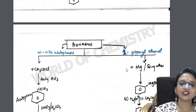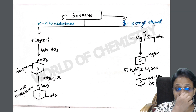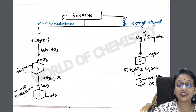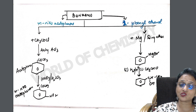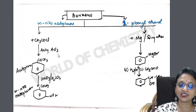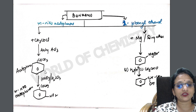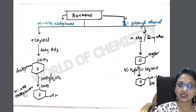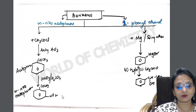Benzene to metanitroacetophenone: do Friedel-Crafts acylation in presence of anhydrous AlCl₃ to get acetophenone. Acetophenone is ready — introduce nitrating mixture, and since the carbonyl group is meta-directing, you get metanitroacetophenone.